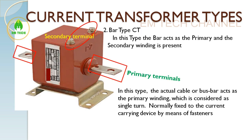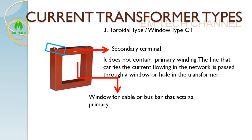In the third type, the actual cable or bus bar acts as a primary winding, considered as a single turn, and is normally fixed to the carrying device by fastening. This is called the toroidal or window type current transformer — this is what we are going to explore today. Unlike the bar type and wound type CT, it does not have a primary winding. Instead, the cable for which we want to measure current passes through this hole, acting as the primary.